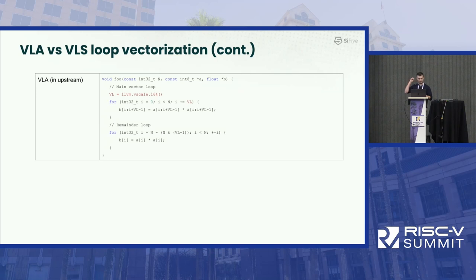Later, ARM came in with their Scalable Vector Extension and extended the loop vectorizer to have a so-called Vector Length Agnostic type of vectorization, where they relaxed one constraint: the vector length, or VL, or vector factor, to be a runtime value, but it's still a loop invariant value. So in general, the loop vectorizer here also generates two things: the main loop and the remainder loop.